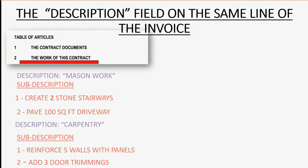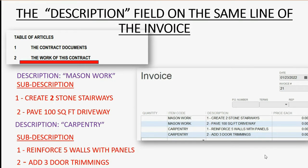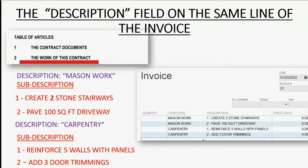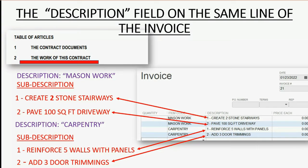The sub-description goes in the description field on the same line of the invoice as the name of the item. For example, if the work on this contract called for two items — mason work and carpentry — the title "mason work" would go in the item code or item name column, and then the sub-description from the contract would go on the same line in the description field of the invoice. This way you can see which items of work appear in each section, and for each item you can clearly see in the description field exactly what the contractor is supposed to do in order to bill the client.